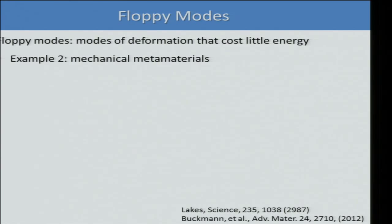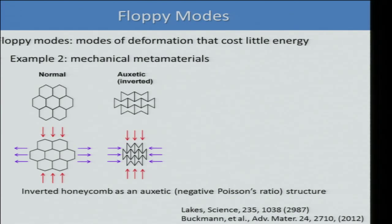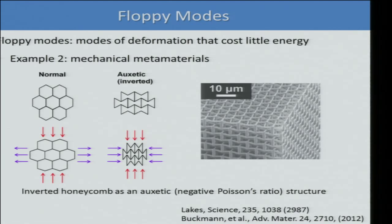This is the auxetic mechanical metamaterial, which means these materials have negative Poisson's ratio. Normally, if you compress a material in one direction, it expands in the other direction. But engineering sometimes requires materials that contract in the other direction when compressed. This is the inverted honeycomb lattice, whose floppy mode contracts in both directions, and it has been used to make real samples of mechanical metamaterials.